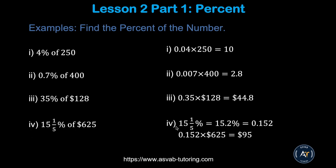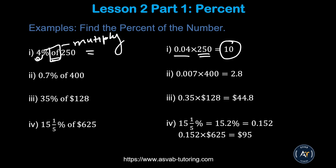Now we'll find percent of a number. Four percent of 250 — the keyword here is 'of,' which means multiply. Convert the percent to decimal by moving two decimal places: 0.04. Then multiply: 0.04 times 250 gives you 10. Make sure you know how to multiply decimals from the previous lesson. Similarly, 0.7 percent of 400 — move two decimal places to get 0.007, then multiply — gives you 2.8.